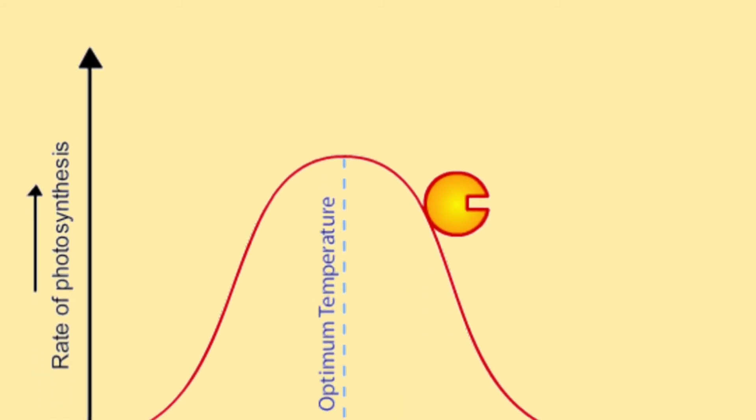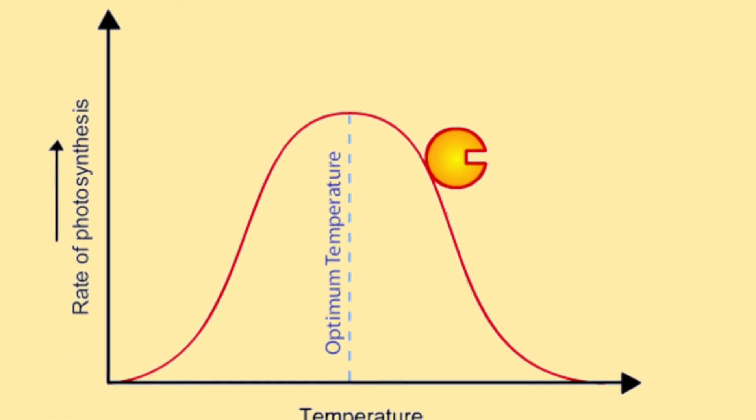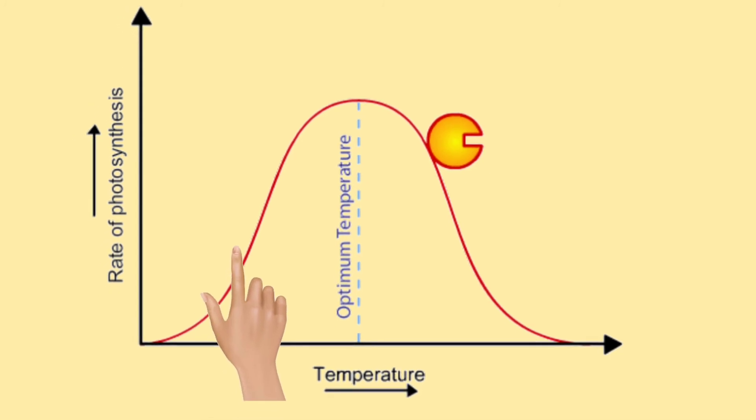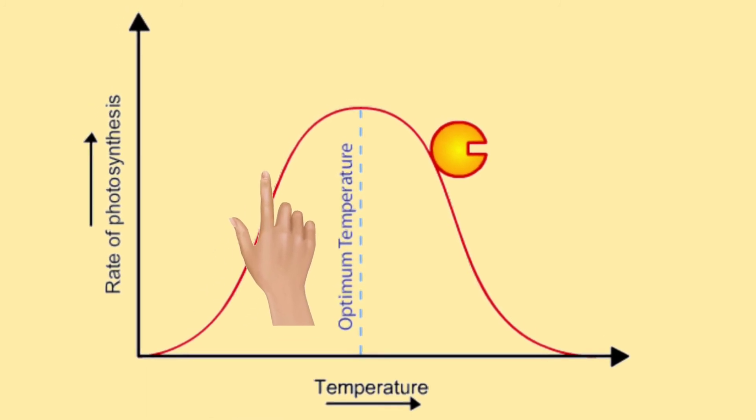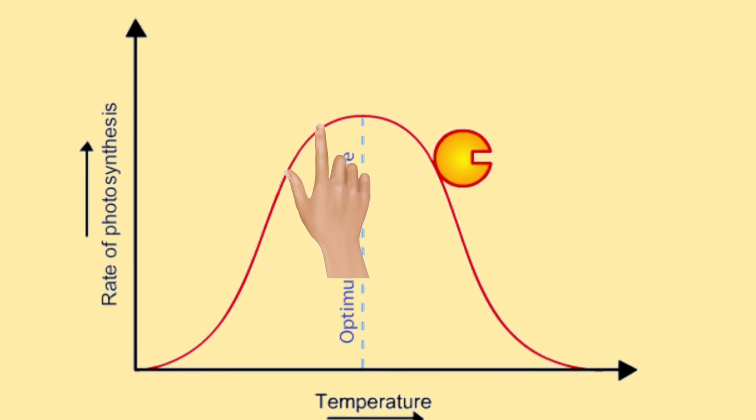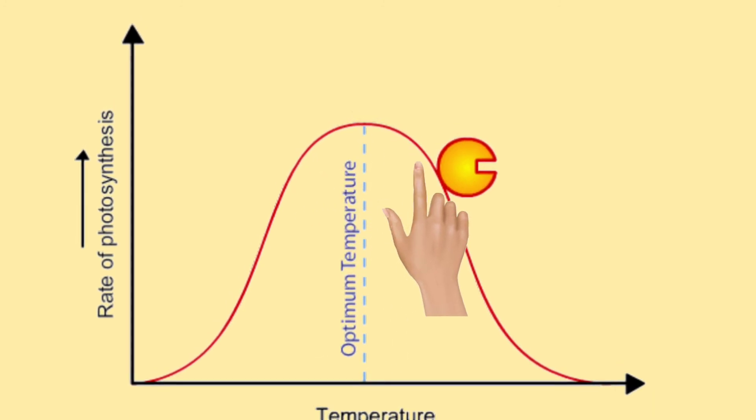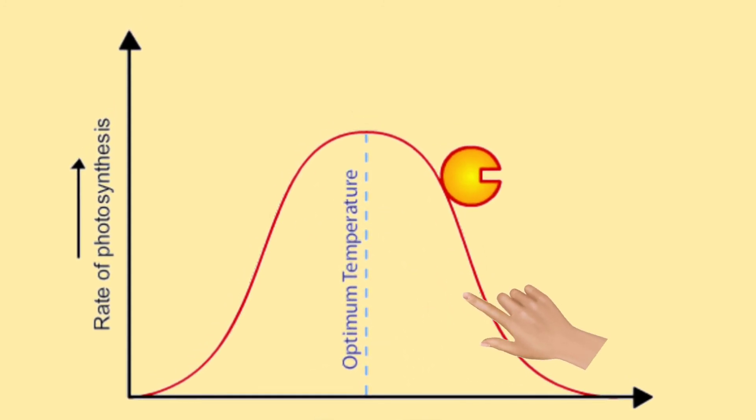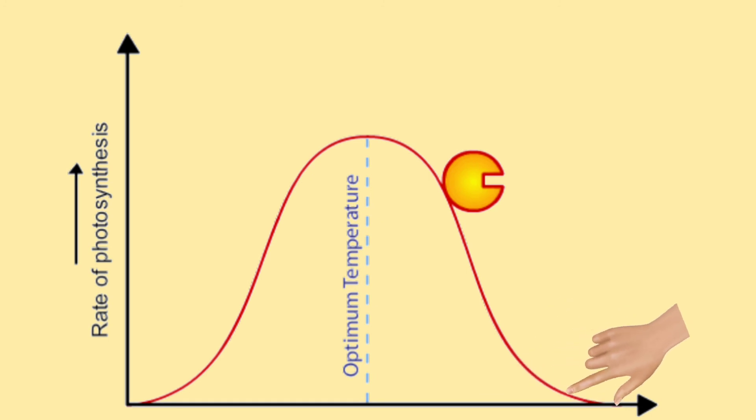लेकिन जब temperature ज्यादा हो जाता है तो high temperature पर क्योंकि enzyme denature होने लगते हैं या उनके denature या deactivate होने का खतरा होता है, इसलिए photosynthesis की activity या photosynthesis की दर decrease हो जाती है.